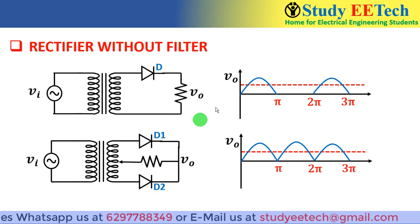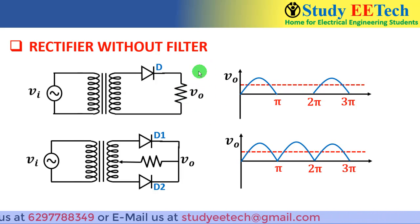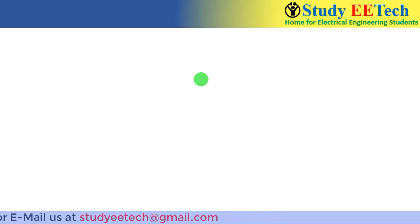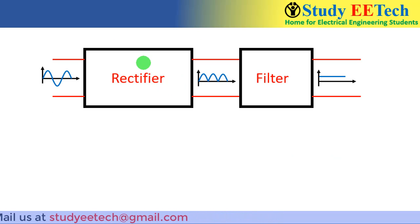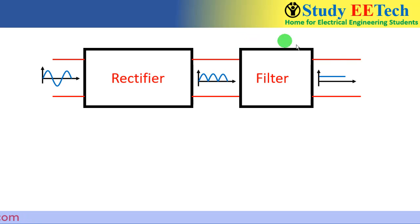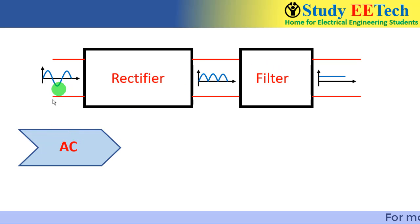We need some extra circuitry, and those extra circuitries are called filters. The scheme will be: the rectifier converts AC to pulsating DC, and this pulsating DC is then converted to smooth DC through the filter. So the stages are: AC stage, pulsating DC stage, and DC stage.